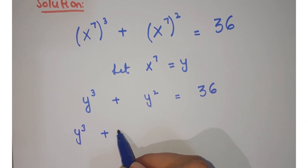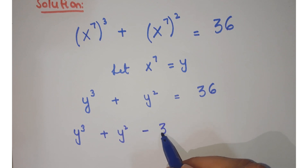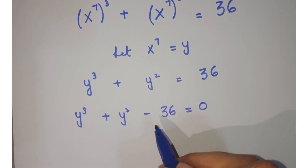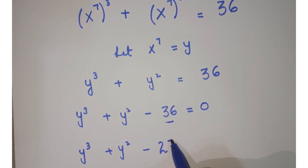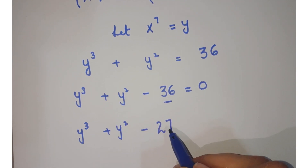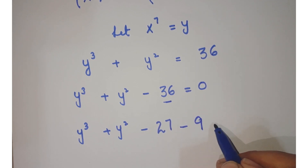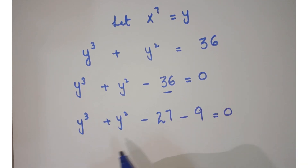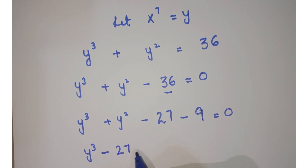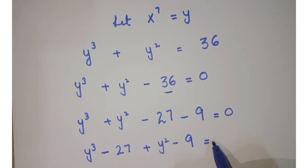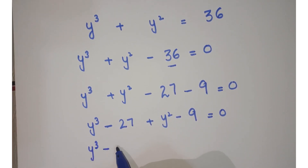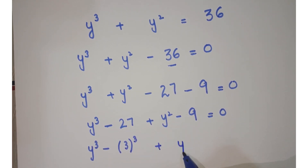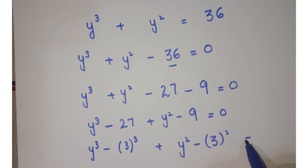We rearrange to get y cubed plus y squared minus 36 equals 0. Now we can split 36 into two values such that one is a perfect cube. We write minus 27 (that is, 3 cubed) minus 9 (that is, 3 squared). Rearranging: y cubed minus 27 plus y squared minus 9 equals 0, which can be written as (y cubed minus 3 cubed) plus (y squared minus 3 squared).